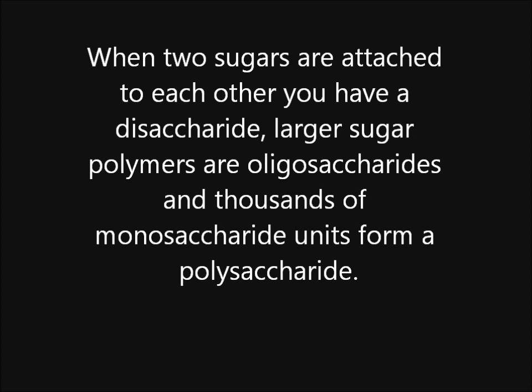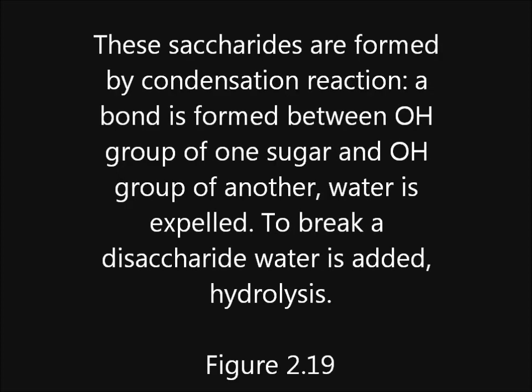Larger sugar polymers are oligosaccharides, and thousands of monosaccharide units form a polysaccharide. These saccharides are formed by condensation reaction: a bond is formed between an OH group of one sugar and an OH group of another, and water is expelled. Water is added in the reverse reaction, which is called hydrolysis.